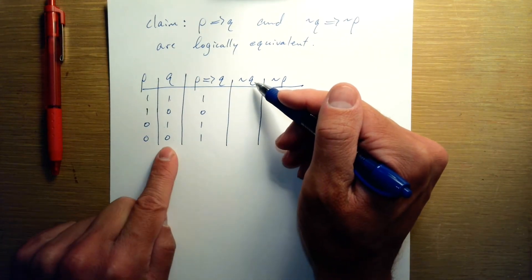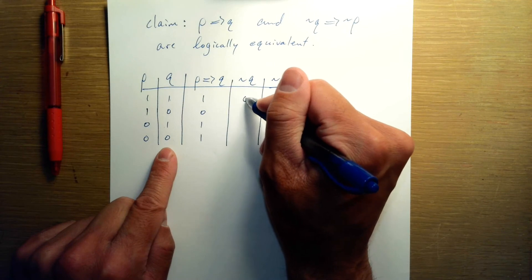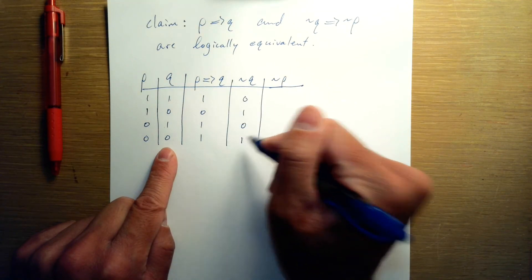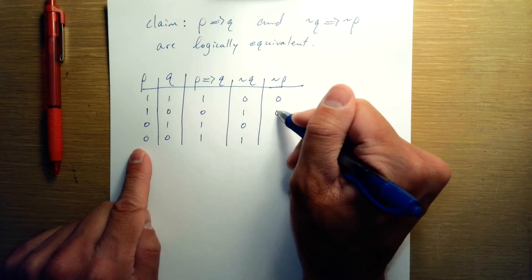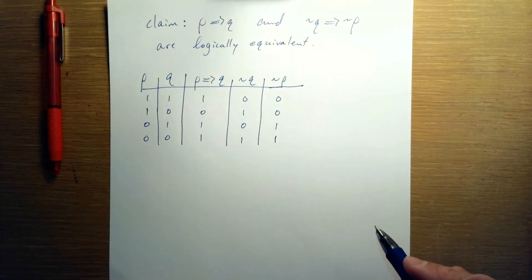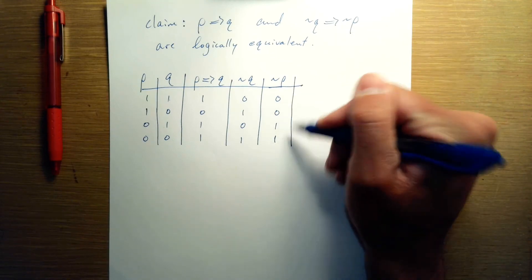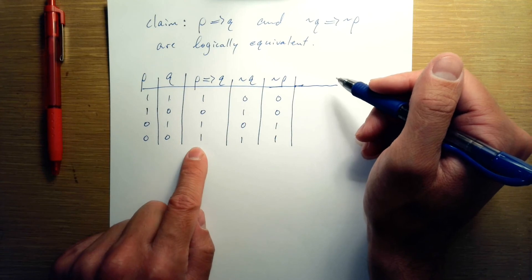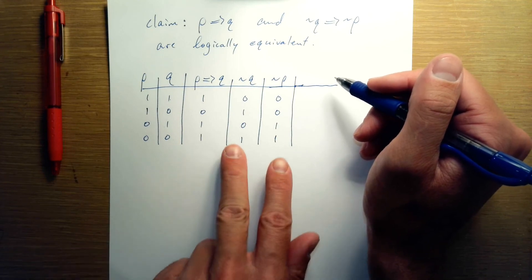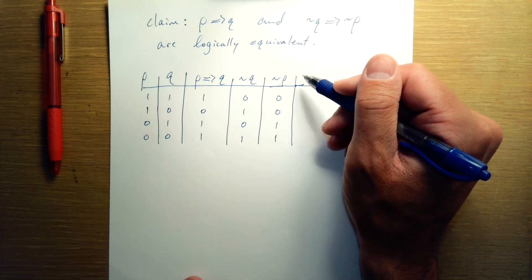NOT Q, we have to look at the Q column. And NOT Q is going to flip those truth values. So that's false true, false true. And NOT P is going to flip P's column. And so that's false, false, true, true. Then NOT Q implies NOT P, we'll be using this skeleton, this overall structure, but these are our inputs. First one, second one.